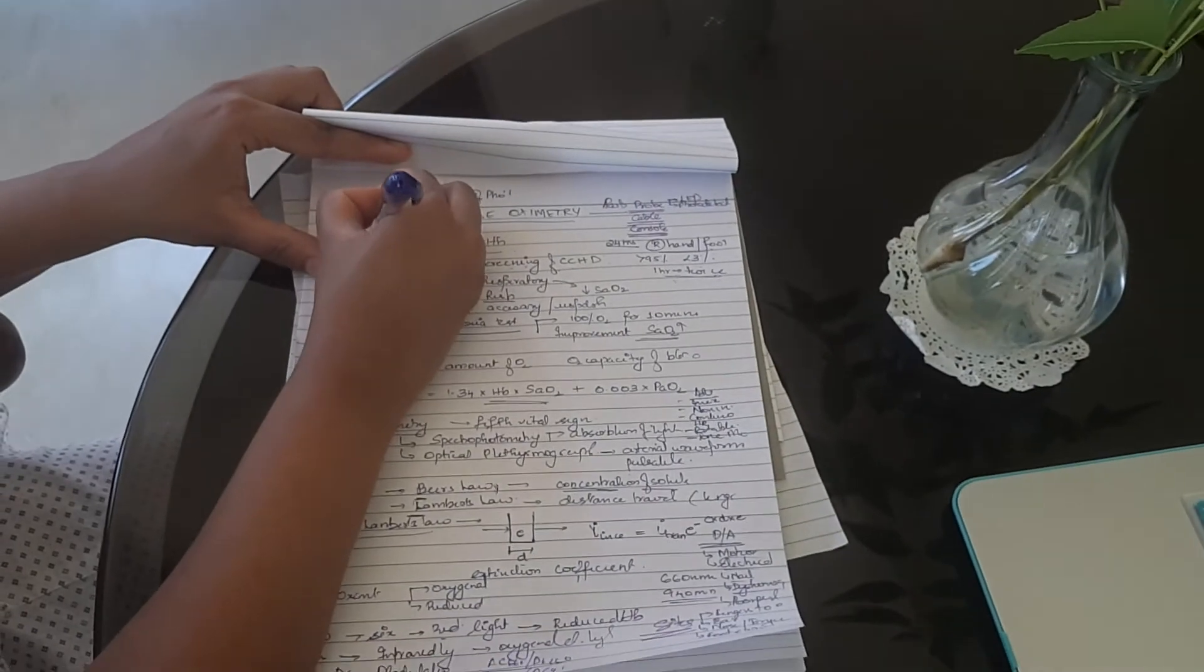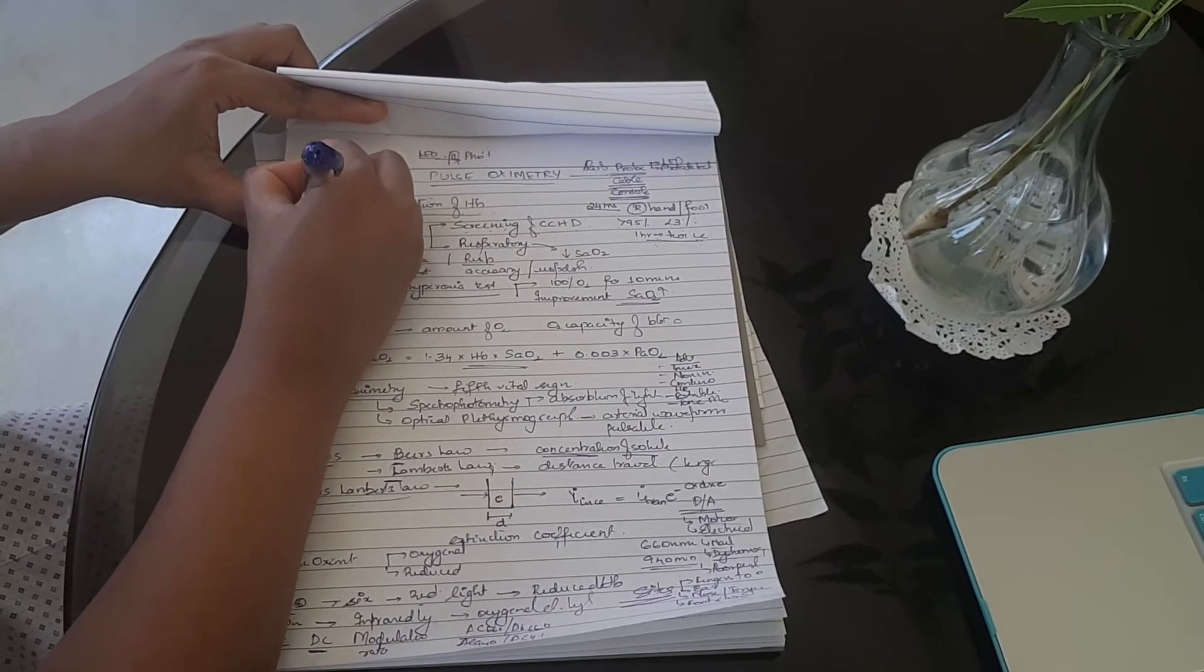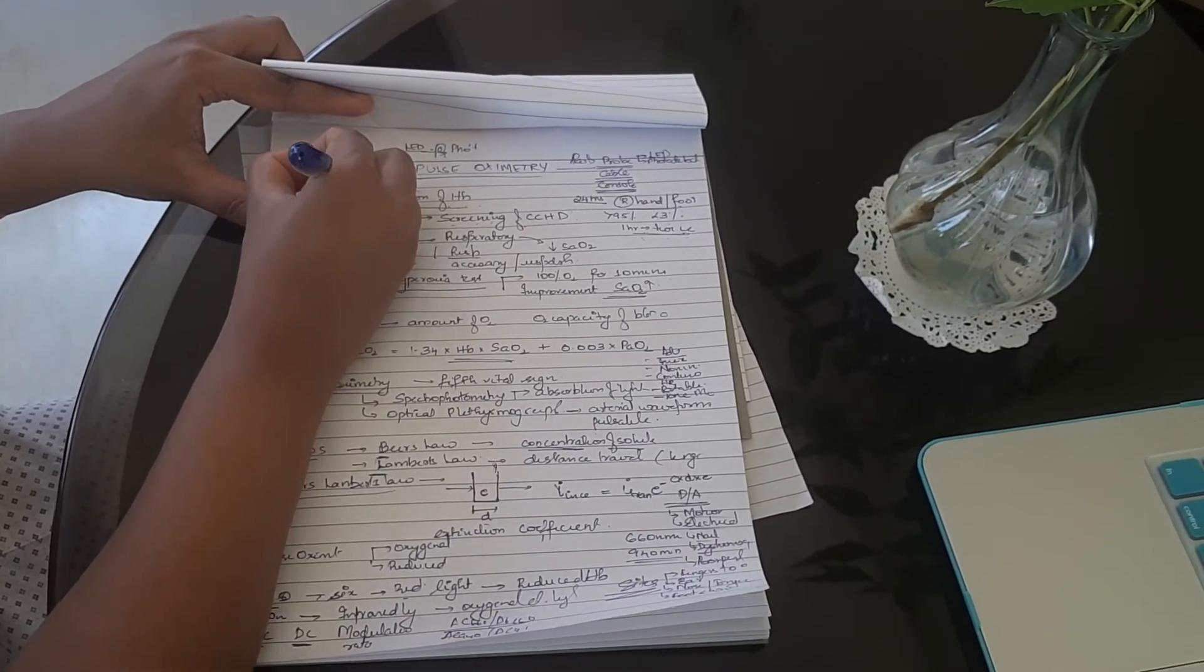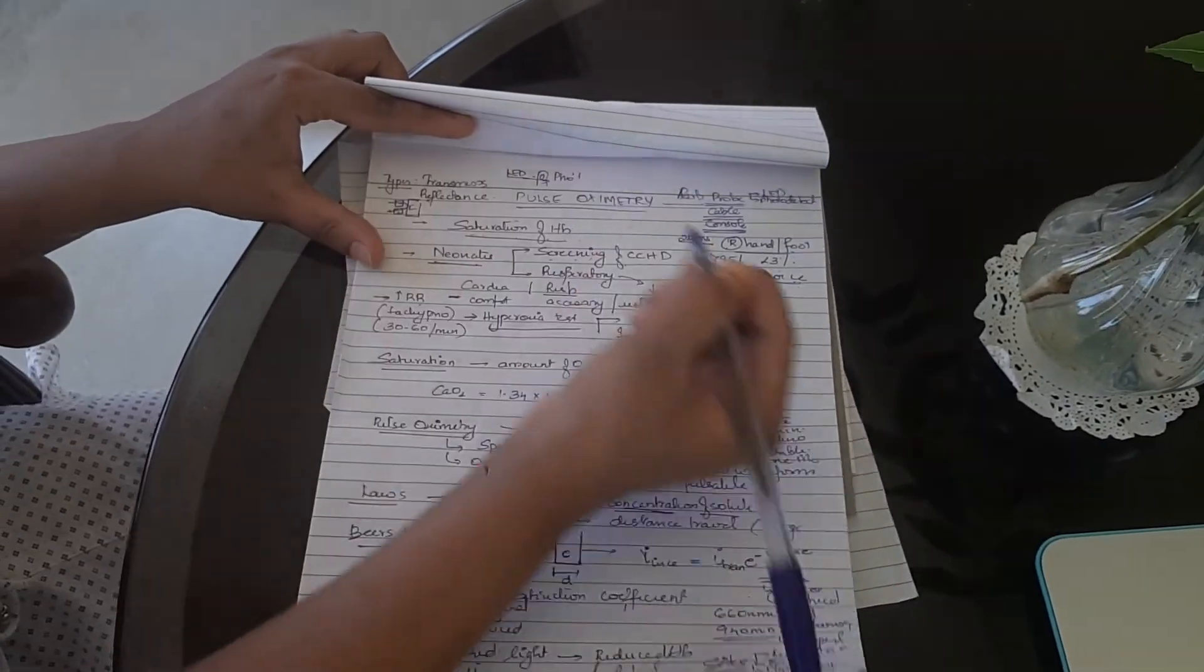The other one is reflectance pulse oximetry. In reflectance pulse oximetry, the light emitting diode and photodetector are on the same side. Say you put it on the forehead - this is the forehead - the light is transmitted, the reflected light is detected.